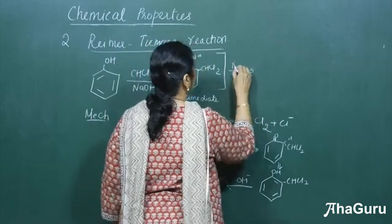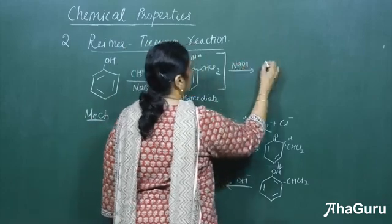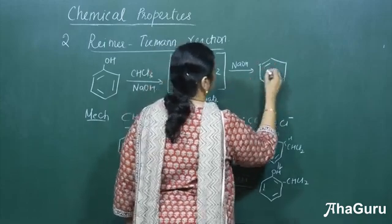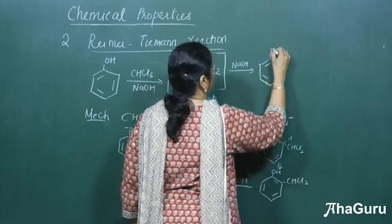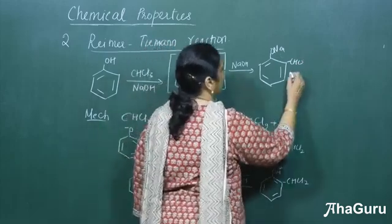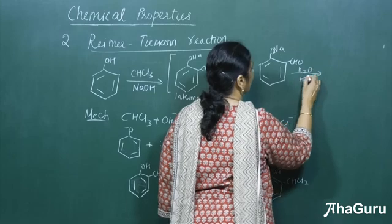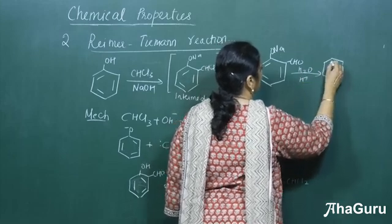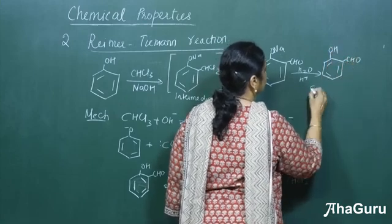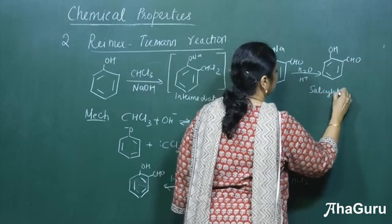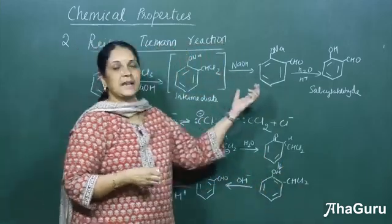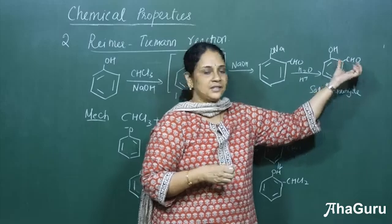This intermediate on treatment with NaOH converts the CHCl₂ group to an aldehyde. Followed by hydrolysis in the presence of H⁺, we get a compound with an OH group and a CHO group. This product is called salicylaldehyde, where we have a CHO group, just like how we prepared salicylic acid.